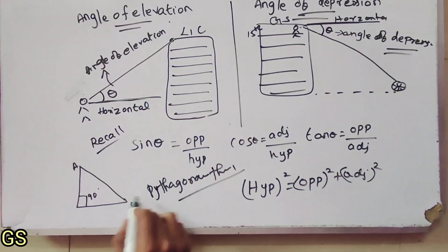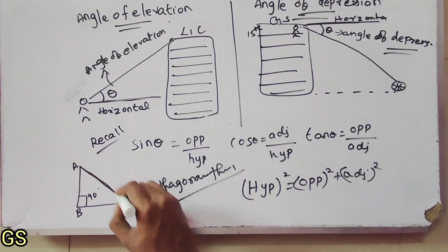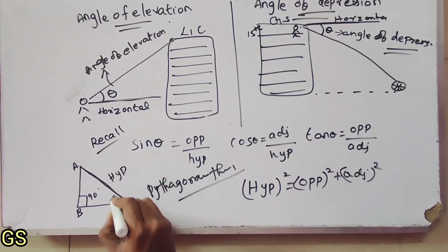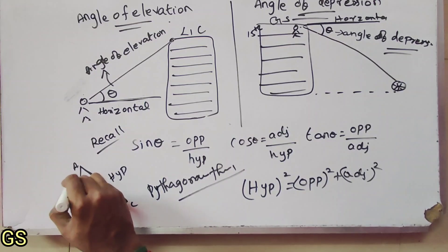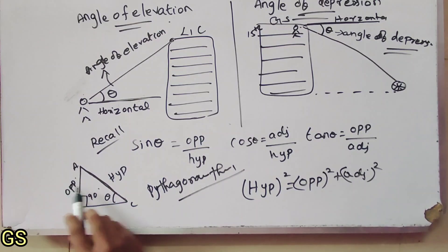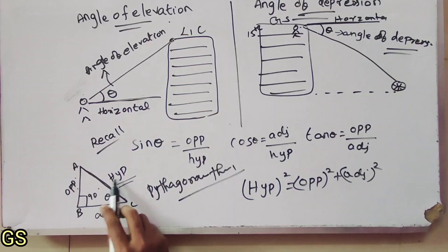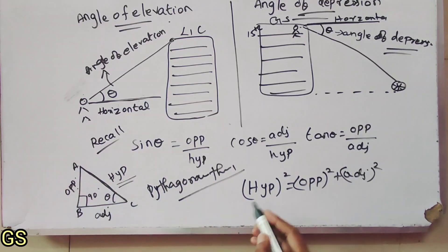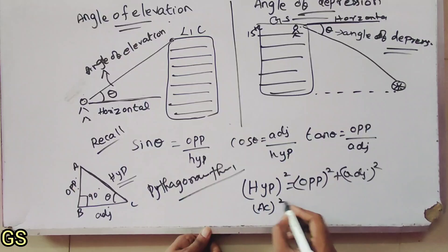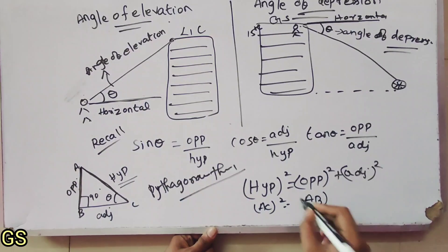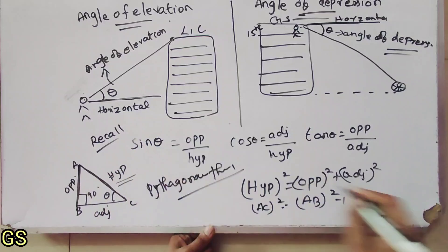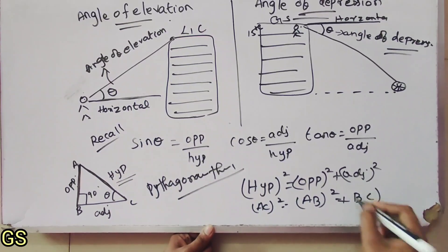So, this is point A, this is B, and this is C. AC is the hypotenuse. Theta is the angle, with opposite side AB and adjacent side BC. So AC squared equals AB squared plus BC squared. This is the right angle.